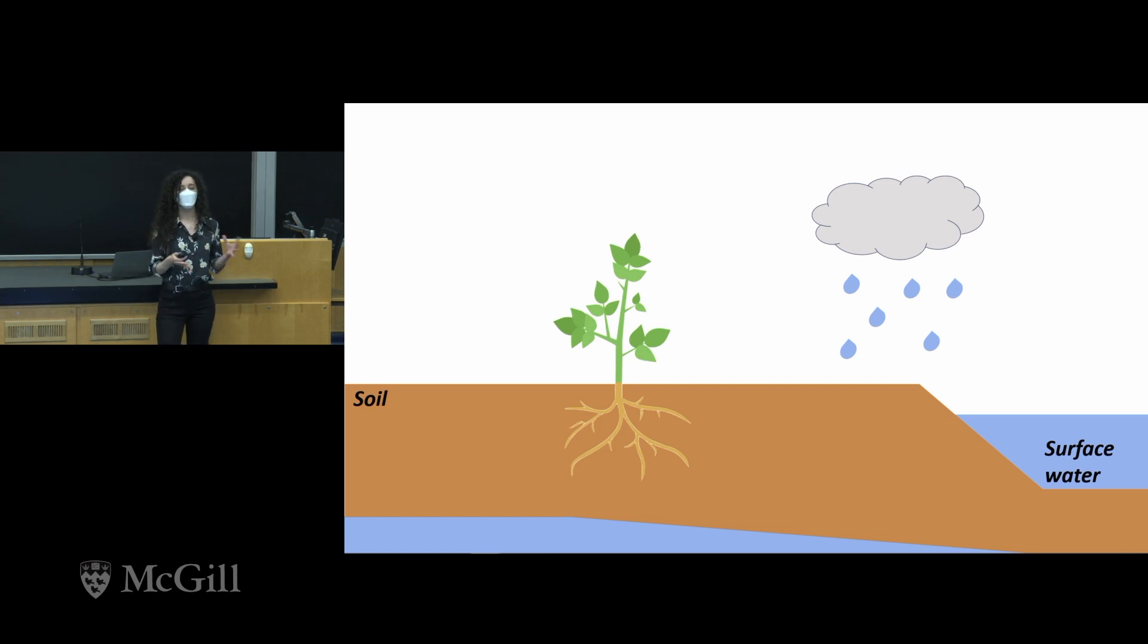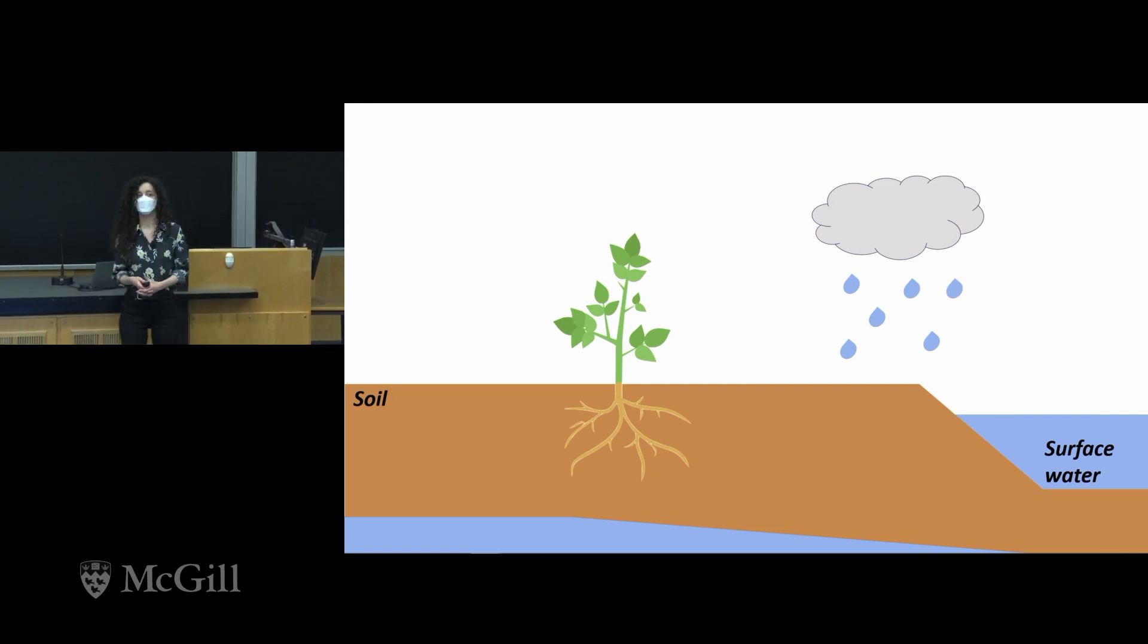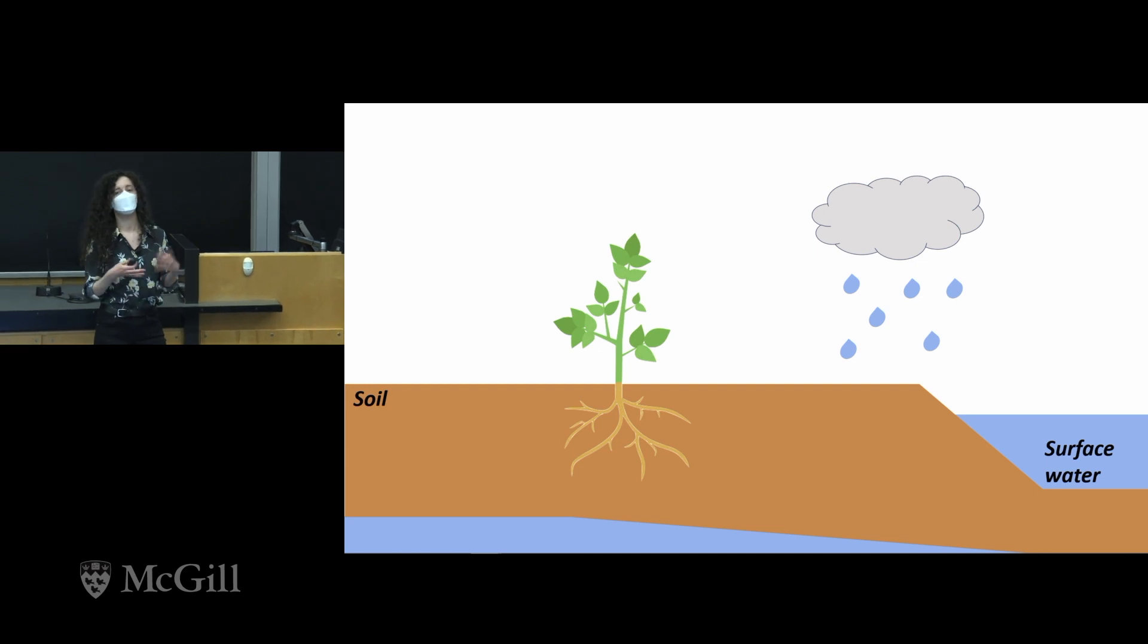However, we're currently going in the opposite direction of what we need to feed the world. Agricultural productivity is decreasing due to inefficient use of fertilizers, soil degradation, and it's expected that things will only get worse with climate change.